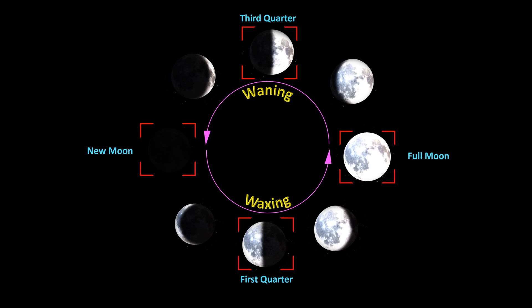Other than these, the phase between new moon to first quarter moon is known as waxing crescent, in which the western edge of the moon is lit but most of the visible surface is dark. And the phase between third quarter to the new moon is known as the waning crescent, in which the eastern edge of the moon is lit but most of the visible surface is dark.